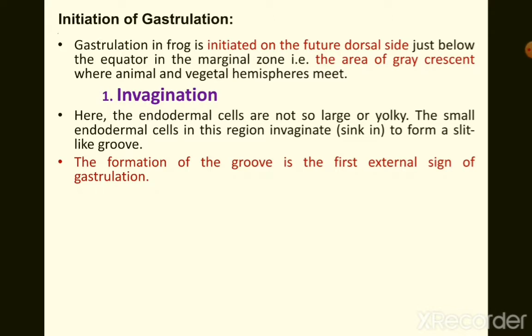The small endodermal cells in the region of the gray crescent invaginate — they sink in to form a slit-like groove. The formation of this groove is the first external sign of gastrulation.